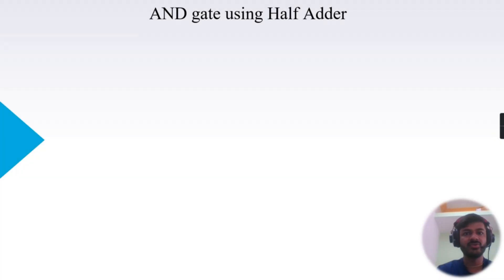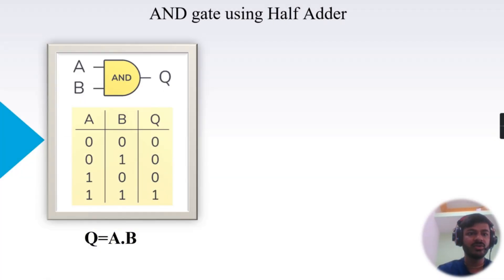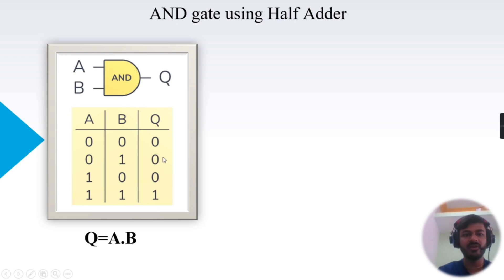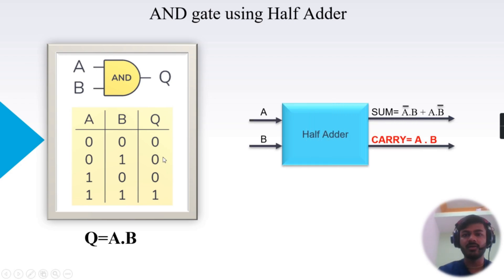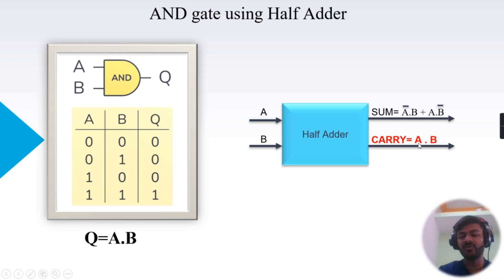Now we'll implement the AND gate using a half adder. You can see the truth table of the AND gate — the logical expression is A AND B. The truth table says that if both inputs are high, then only the output will be high; otherwise, output will be low. Looking at the block diagram of the half adder, we already get the output of an AND gate in the form of carry. So to implement an AND gate from a half adder is very easy.